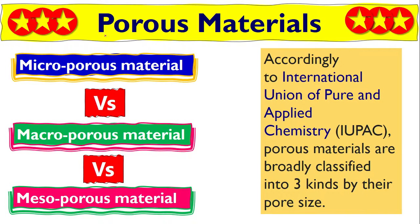Let's talk about porous materials, sometimes called nanoporous materials. When you are synthesizing — that means making — a nanomaterial, how will you know if your material is a microporous, macroporous, or mesoporous material? According to IUPAC, porous materials are broadly divided into three types by their pore size. Porous materials contain pores, like a sponge.